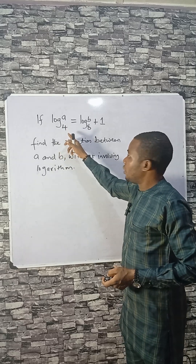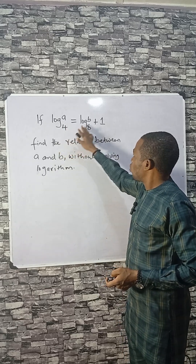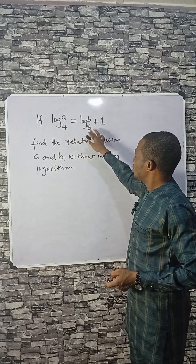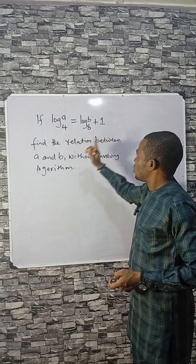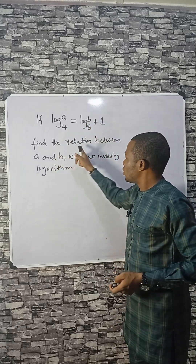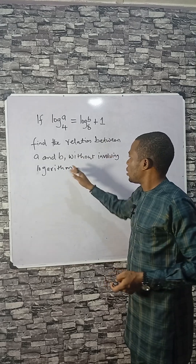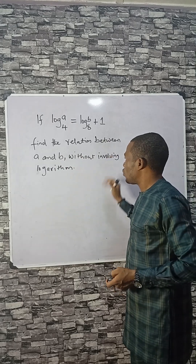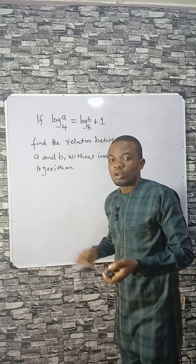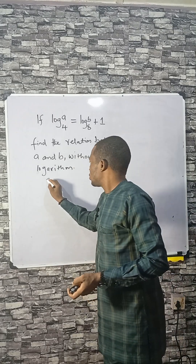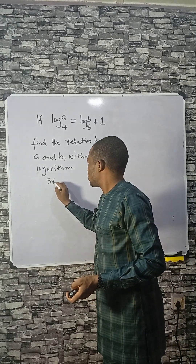If log A base 4 equals log B base 8 plus 1, find the relation between A and B without involving log. Solution: